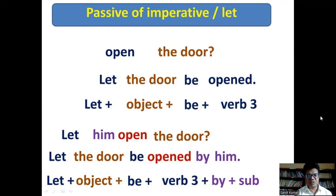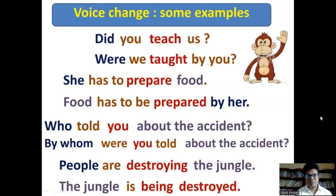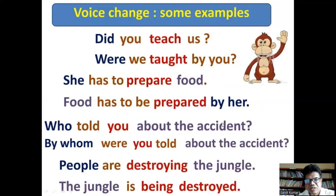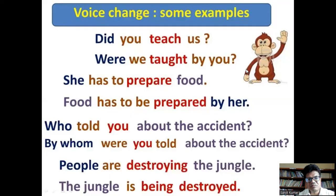For passive in imperative form: 'Open the door' → 'Let the door be opened.' You have to add 'let' first, then the object, then the be verb plus past participle form of the verb, then 'by' plus subject. You can take screenshots of these examples and save them for future use. That's all for today — thank you for your patience and for staying with me for such a long time. Have a nice day!